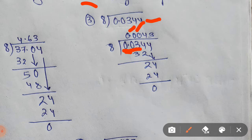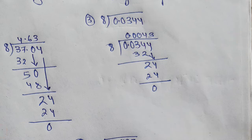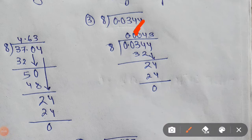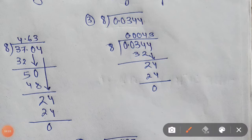Now the next number we have is 3. Since 3 is smaller than 8, we cannot divide 3 by 8. So we will take 34 together. To take 34 together we have to put one extra 0 in the quotient. Whenever we want to take 2 numbers together we always put an extra 0. Now in the table of 8, 8 times 4 is 32. Subtract 32 from 34 you will get 2. This 4 will come down and become 24. Now 8 times 3 is 24. So your final answer will be 0.0043.